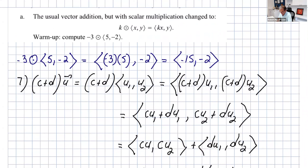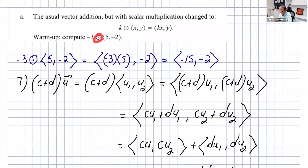I picked part (a): the usual vector addition, but with scalar multiplication changed. The scalar multiplication — usually k scalar (x, y) gives (kx, ky), but in this case it's just (kx, y) only. First, if you want to compute this with k = -3 applied to the vector (5, -2): that's k = -3, so the first component is -3 times 5, and the second component stays the same. So you get (-15, -2).